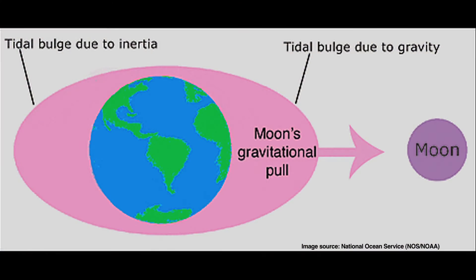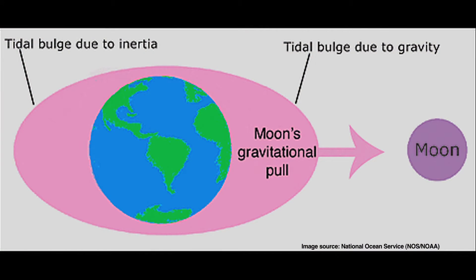You might wonder: where do tides come from? Tides are caused by the pull of gravity on the earth by the moon. At certain times of the month, like right now, the moon, the sun, and the earth are aligned just right so that the moon pulls really strongly on the water and causes really low tides. That's why we have minus tides today, and that is the best time to go tide pooling.